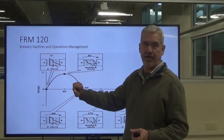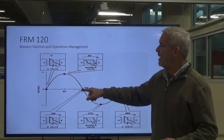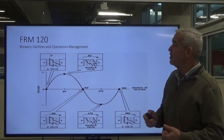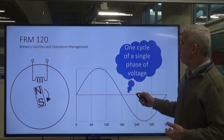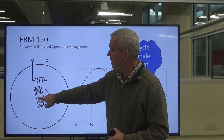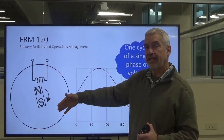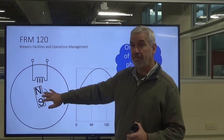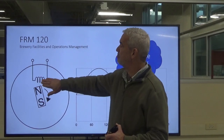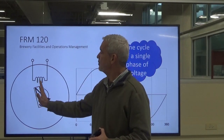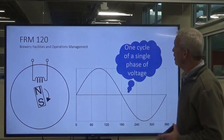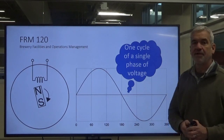The speed at which this rotor and coil of wire is turning — this is happening 60 times a second. That is one cycle of a single phase of voltage. Here's the coil of wire, or the rotating magnetic field. You can also turn the magnetic field by a coil of wire, which is typically what's done at the power generation plant. Every time the field passes by the coil at full strength, you get a voltage output — a single phase of voltage.